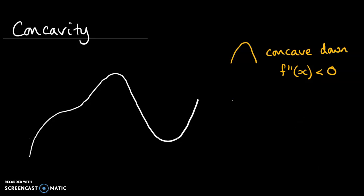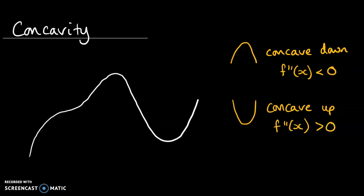For concave up, the reverse is true. Concave up looks like a valley shape, or some part of that curve. In that case, the second derivative is greater than zero, because the rate of change of the gradient is positive — meaning the gradient is gradually getting more and more positive, either moving from negative to positive, or from positive to being even steeper positive.